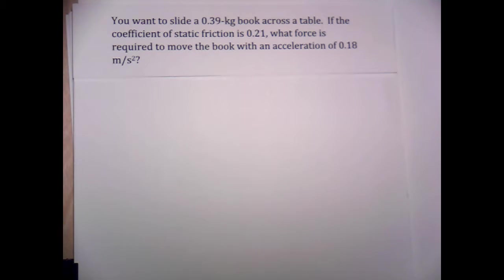This is problem number 40 from chapter 5 in the Walker Physics book. It's a friction problem, so we're told that we want to slide a 0.39 kilogram book across a table.